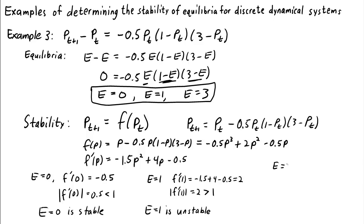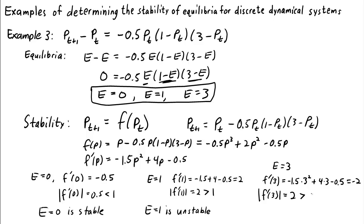For e = 3: f'(3) = −1.5·(3²) + 4·3 − 0.5 = −13.5 + 12 − 0.5 = −2. The absolute value is 2, which is greater than 1, so the equilibrium at e = 3 is unstable. This cubic dynamical system had three equilibria: 0, 1, and 3. Only the equilibrium at 0 is stable; the other two equilibria are unstable.